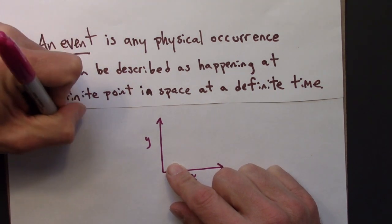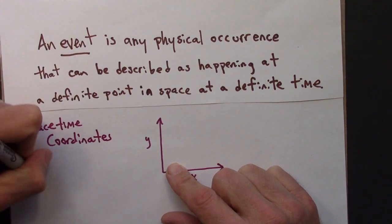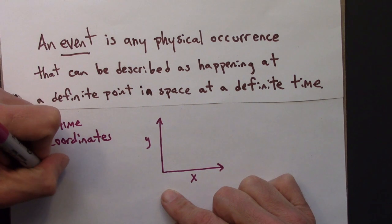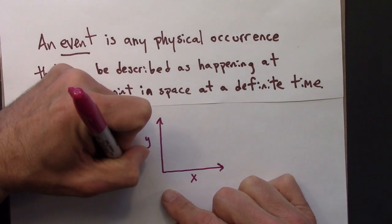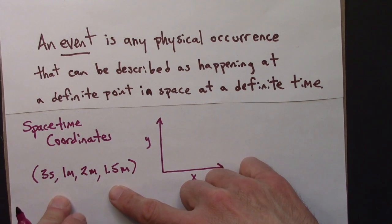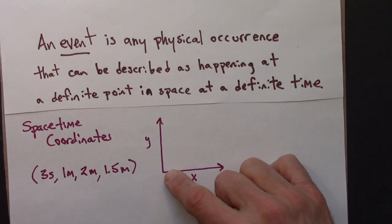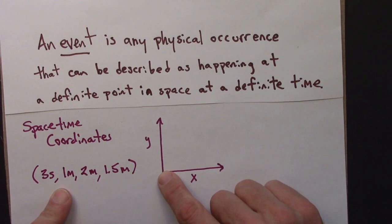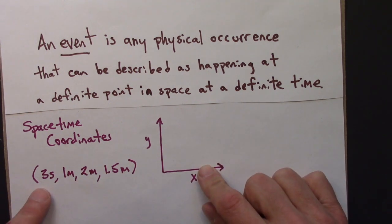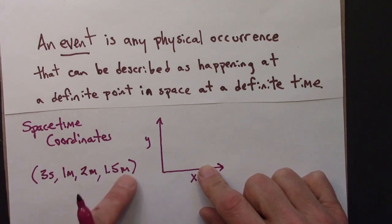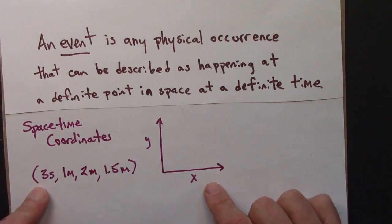So this would be space-time coordinates. And that would be a series of four numbers. These are completely made-up numbers. This would describe an event that happens three seconds after your zero time. So you choose a zero time and a zero position. And then one meter in the x-direction, two meters in the y-direction, one point five meters in the z-direction. So this tells us the time at which an event occurs, and this tells us the spatial position. And together, these are the space-time coordinates. We would say these four numbers describe a point in space-time.